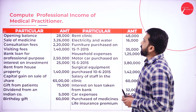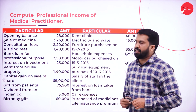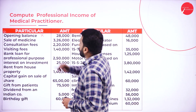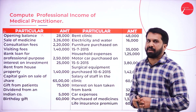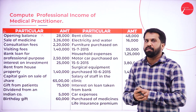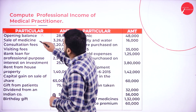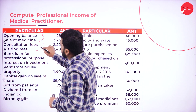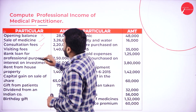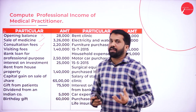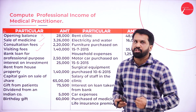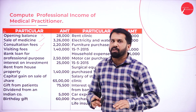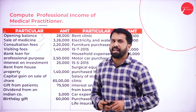We will compute the professional income of a medical practitioner. In this, we have an opening balance — as I told you, opening balance and closing balance are not part of your answer. We have sale of medicine, consultation fees, visiting fees, and bank loan for professional use. Note that bank loan is of a capital nature — we will not take bank loan in your calculation.